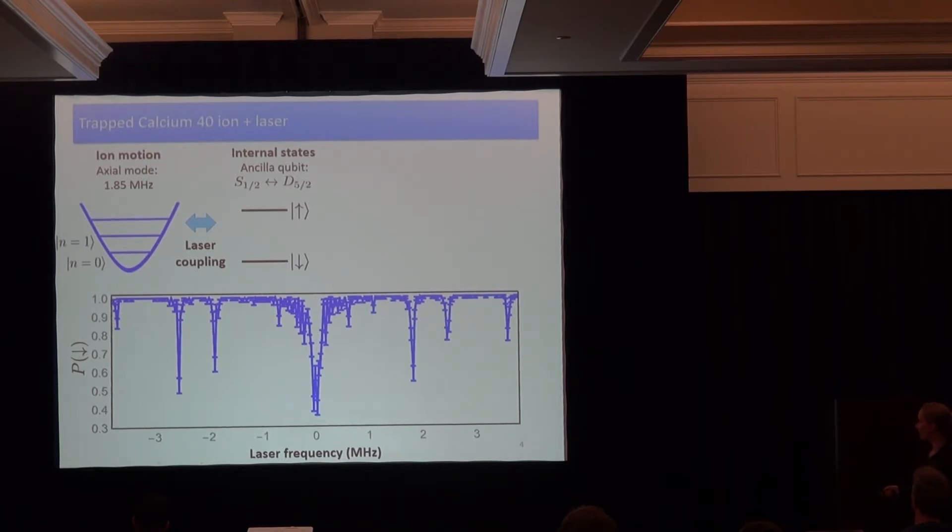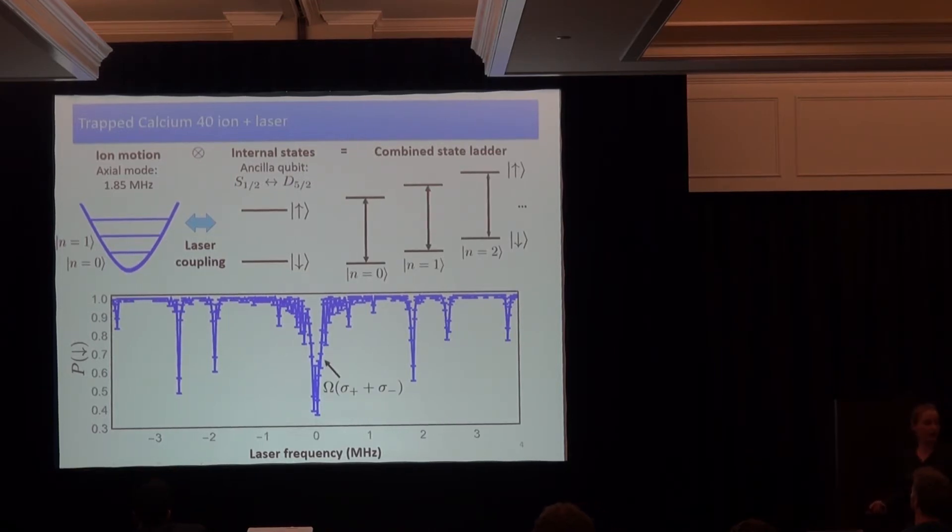So if we shine the laser close to resonance with such a transition, we observe these spectrums and all these peaks correspond to frequencies where we can excite the internal states. This big middle peak is what we call the carrier transition. We just excite the internal state and we don't do anything on this motional oscillator. At lower frequencies, we find the red sideband. So when we excite the atom we reduce the motional oscillator by a quanta.